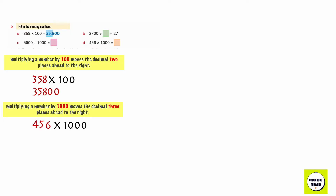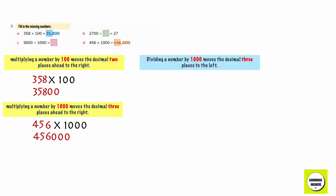So 456 multiplied by 1,000 gives us 456,000. Dividing a number by 1,000 moves the decimal three places to the left. So 5,600 divided by 1,000 gives us 5.6.